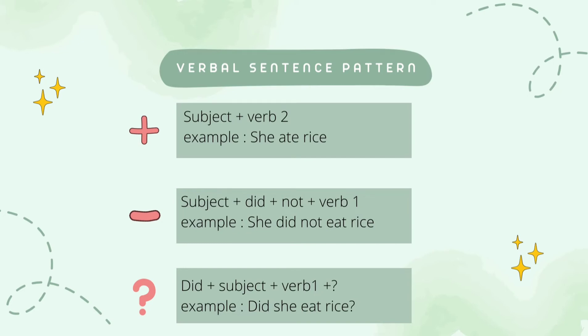Next is interrogative sentence. The pattern is did plus subject plus verb 1. For example, 'did she eat rice?' So, for verbal sentences: if the sentence is positive, make sure the verb you use is verb 2. But if the sentence is negative or interrogative, the verb used is verb 1 because the past tense has already been represented by 'did.'